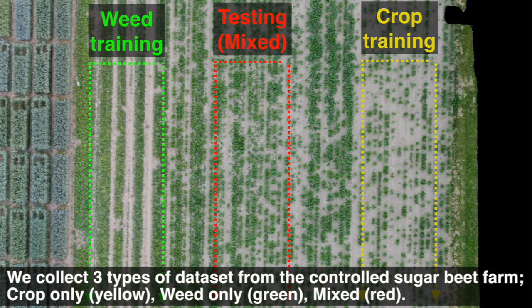We collect three types of datasets from the controlled sugar beet farm: crop only in yellow, weed only in green, and mixed in red color.